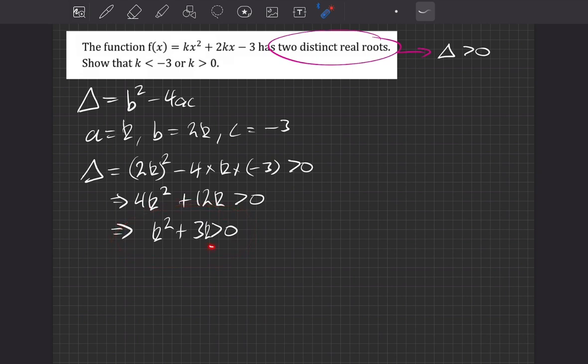We have a quadratic, and we want when it's greater than 0. So we're going to think about the roots. We'll solve k squared plus 3k is equal to 0. So we can factorize the k out. We get k times k plus 3 equals 0. So our k then is equal to 0 or minus 3.